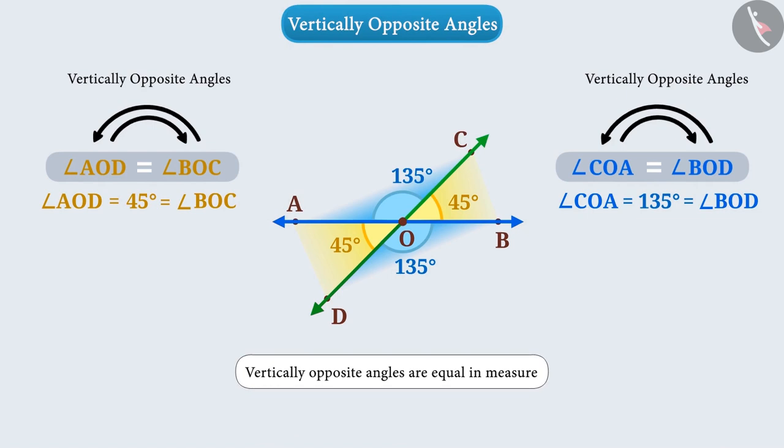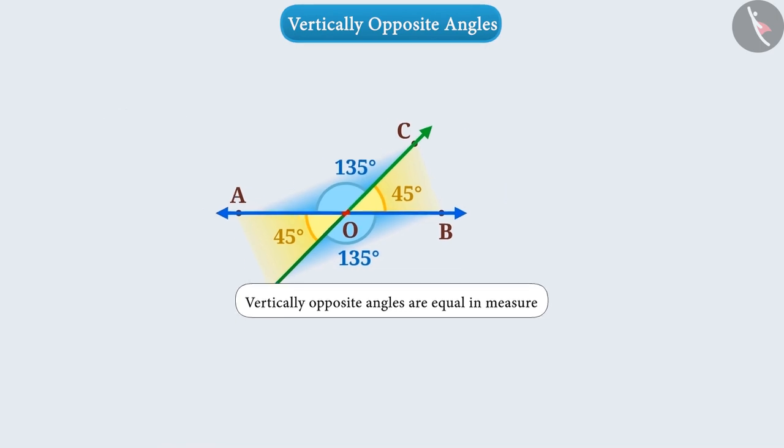This shows us that the measurement of two vertically opposite angles are equal. In this way, the measurement of vertically opposite angles formed by the intersection of two lines is similar. Let's prove this.